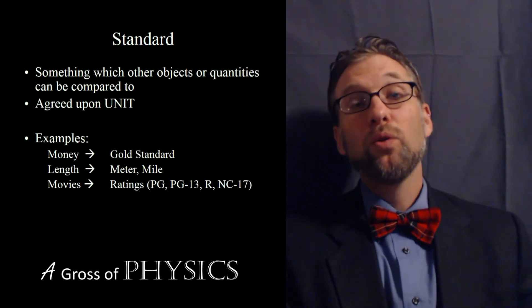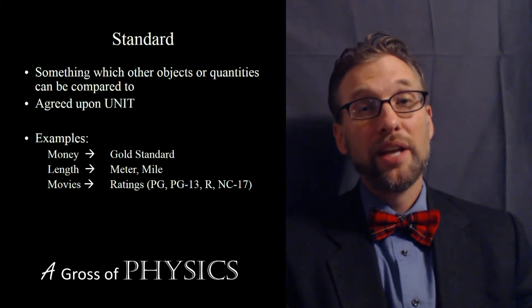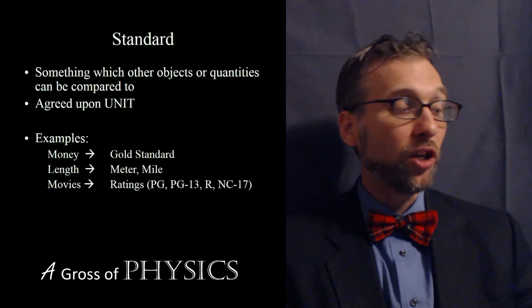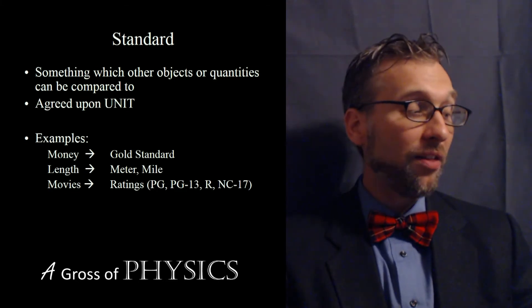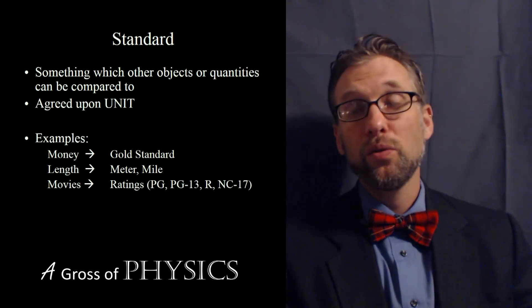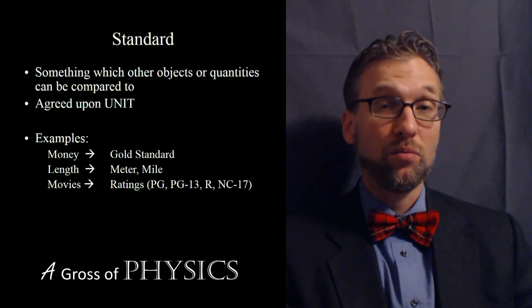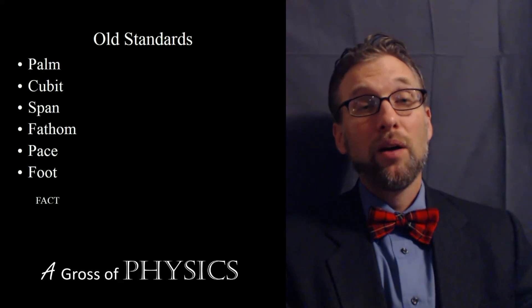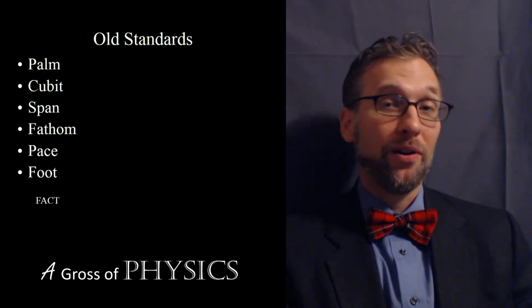We used to have older standards and a list of older standards such as the palm and the cubit and the span and the fathom, the pace or the foot are all ones that were used before the metric system was invented. Now, each one of these is based on a body part.